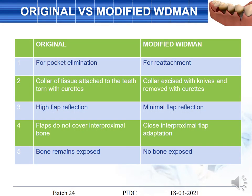The difference between the original and modified Widman flap: the original is for pocket elimination while the modified is for reattachment. In the original, collar tissue is removed with knives and curettes; in the modified, curettes are used. The original has high flap reflection and flaps do not cover interproximal bone, leaving bone exposed. The modified has minimal flap reflection, covers interproximal bone, and bone is not exposed.